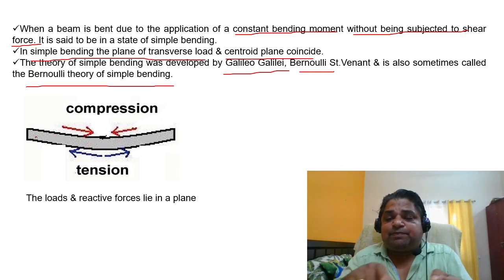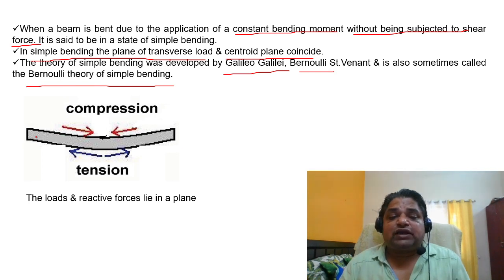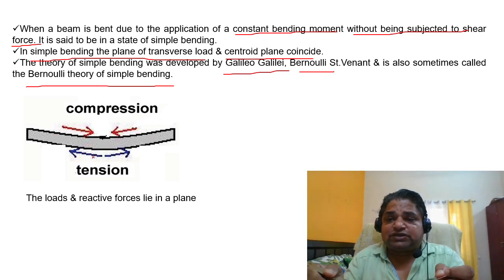When any bending moment is present, you can see that there are two different parts: a concave part and a convex part. The internal concave part is under compression, while the outer convex part is under tension — the outer fiber is always in a stretching condition and the inner fiber is under compression.